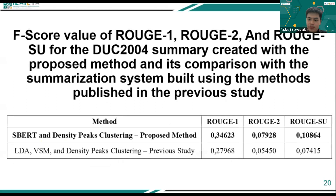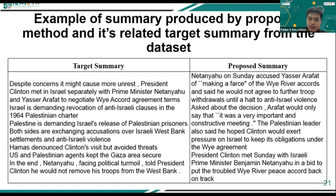The table shows the comparison of ROUGE F-score values for the DUC 2004 summaries created with the proposed method versus the baseline method. The proposed method outperformed the baseline in terms of ROUGE score. An example summary generated by the proposed method is shown alongside a reference summary from the dataset. The document cluster discusses the aftermath of a ceasefire agreement signed by Palestine and Israel. The proposed method's summary successfully conveys the essential topics also present in the reference summary.